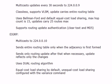EIGRP uses the DUAL routing algorithm. It performs equal cost load sharing by default, and as we'll see, we can configure unequal cost load sharing with the variance command — we'll be doing that live as well.